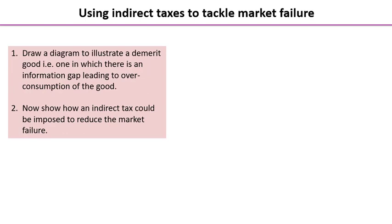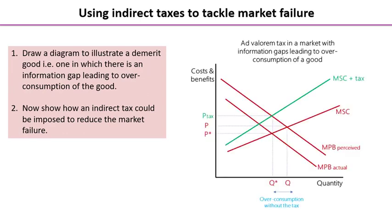Take a minute to do that before restarting the video and taking a look at what we've already drawn for you. We've labelled our marginal private benefit curves as 'perceived' and 'actual', focusing on the issue of information failure. It would be absolutely fine if you labelled the right-hand MPB curve as marginal social benefit — you'd have had exactly the same effect. Take a moment to stop and check your diagram against ours; this one is slightly trickier than the previous example of negative production externalities.